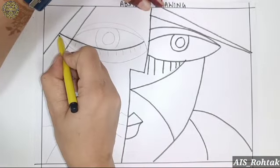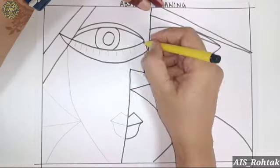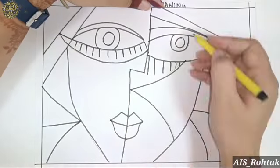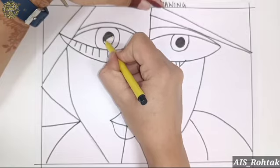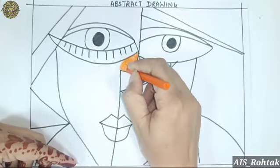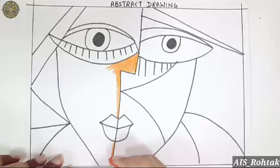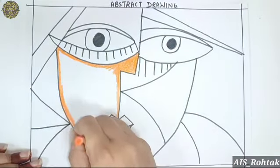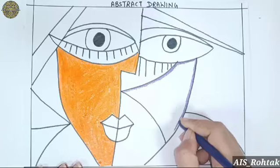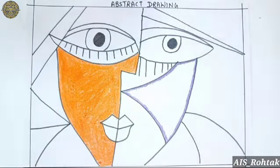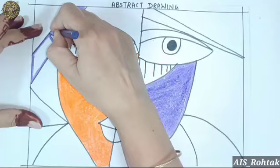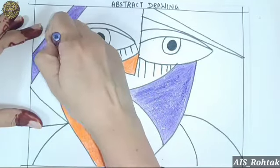After finishing the drawing, we do the outline with the help of black sketch first, then we fill colors. We can fill colors of our choice, but the condition is that we can't repeat colors in nearby boxes. Like in this box I am using orange color and in another box I'm using purple color.